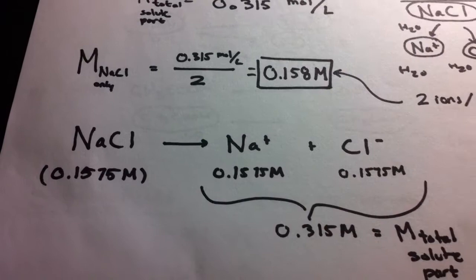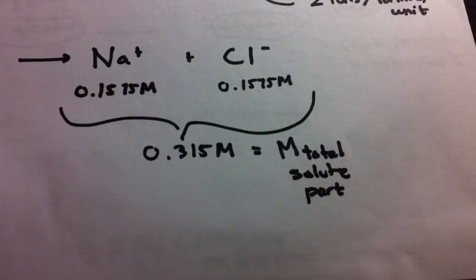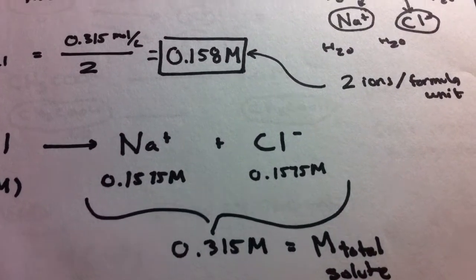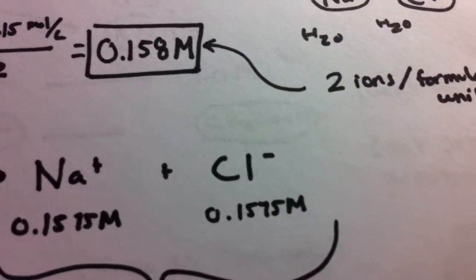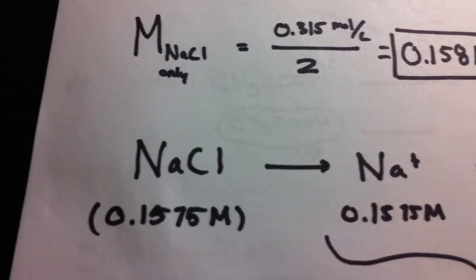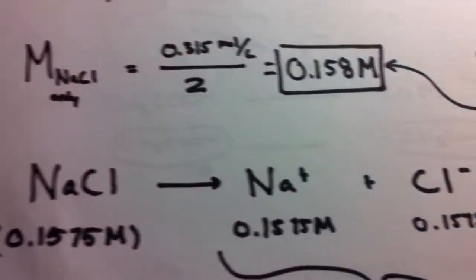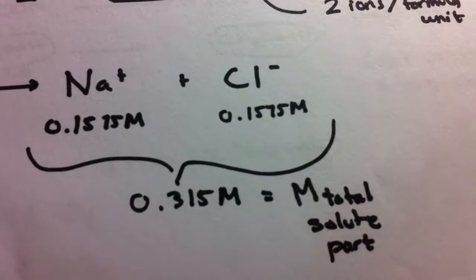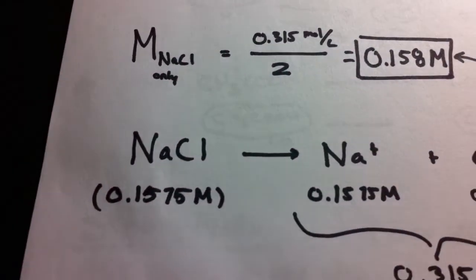If you want to think about it like this: we have our total solute particles that we calculated, and each one is going to be individually sodium and chloride. Because NaCl dissociates into these two equally, it equals our total solute particles divided in half.